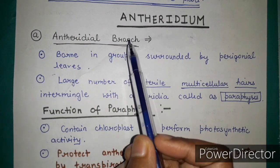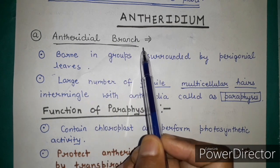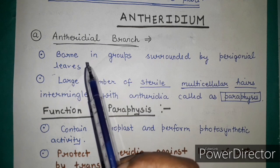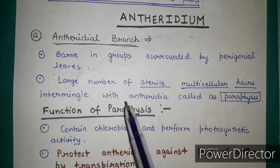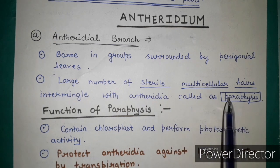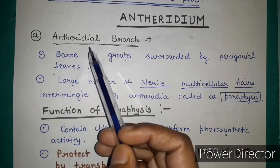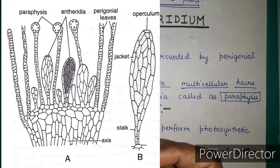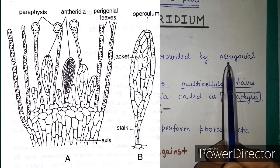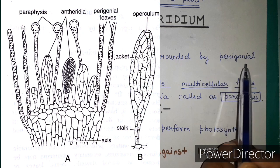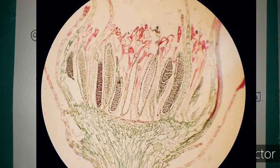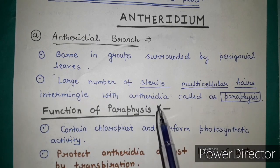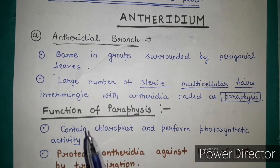The anthridia are basically borne on the anthridial branches. These anthridial branches bear anthridia in groups, which are surrounded by perigonial leaves. A large number of sterile multicellular hairs called paraphyses intermingle with the anthridia on the anthridial branch.